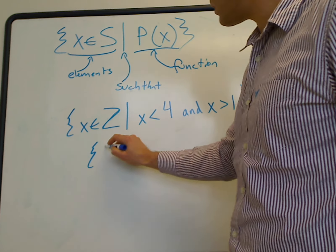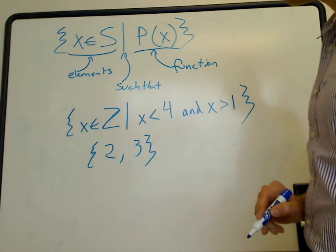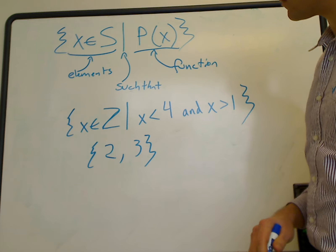To be an integer greater than one and less than four, this has to be two and three. So our set is just {2, 3}.